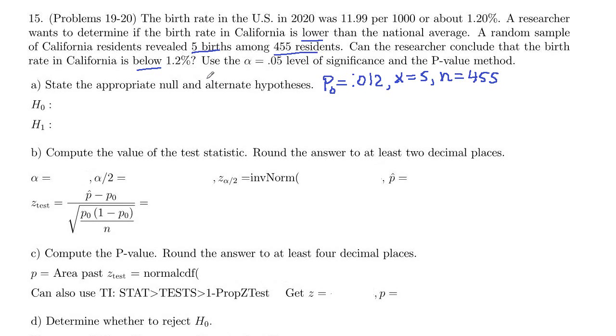And then we're testing to see if the California birth rate is below. So our alternative hypothesis is going to be that p, the proportion of births, is less than 0.012. If that's not the case, then we conclude that p is equal to 0.012, the national average.